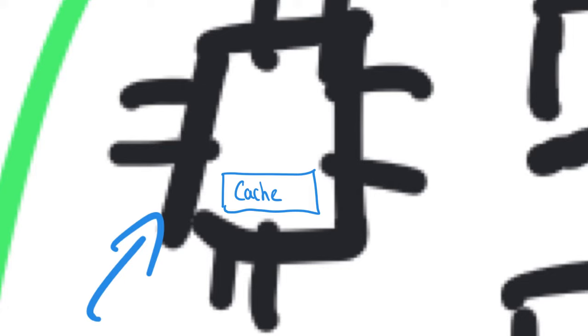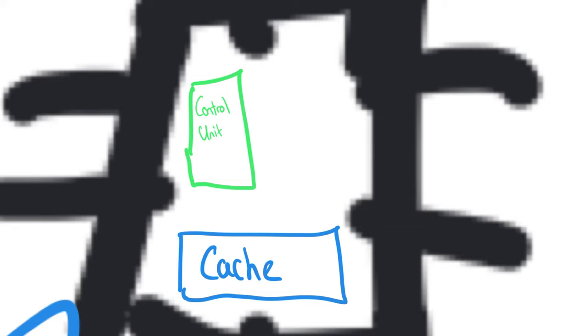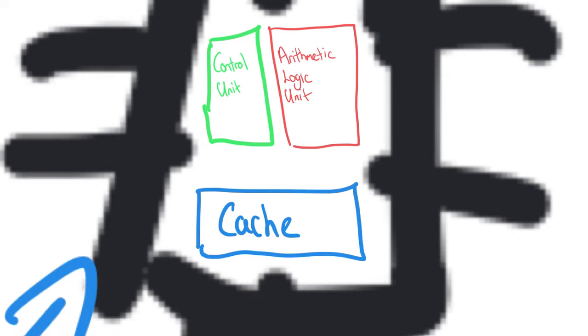To decode instructions, the CPU uses a component called the control unit. The control unit controls the fetch, decode, execute cycle — it manages it, manages the signals, synchronizes them, and also helps decode what the instruction is going to do. Once we've fetched and decoded the instruction, the last step is to execute — to do it, to make it happen. That happens in something called the arithmetic logic unit. The ALU does arithmetic instructions like adding or subtracting, and logical operations — comparisons like 'is it the same as' or 'is it larger than'. The control unit is shortened to CU.